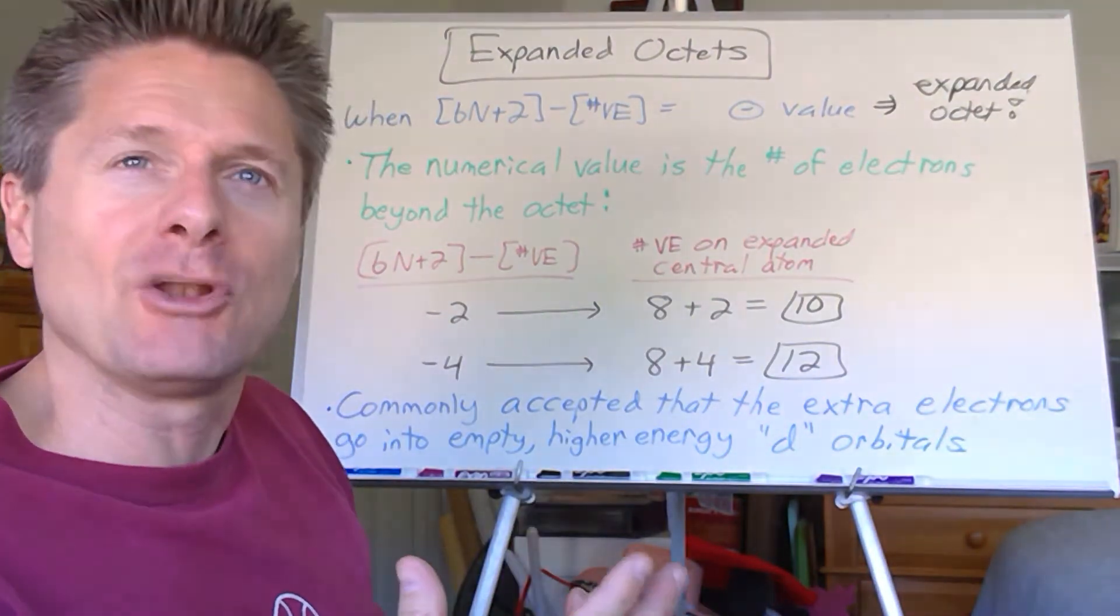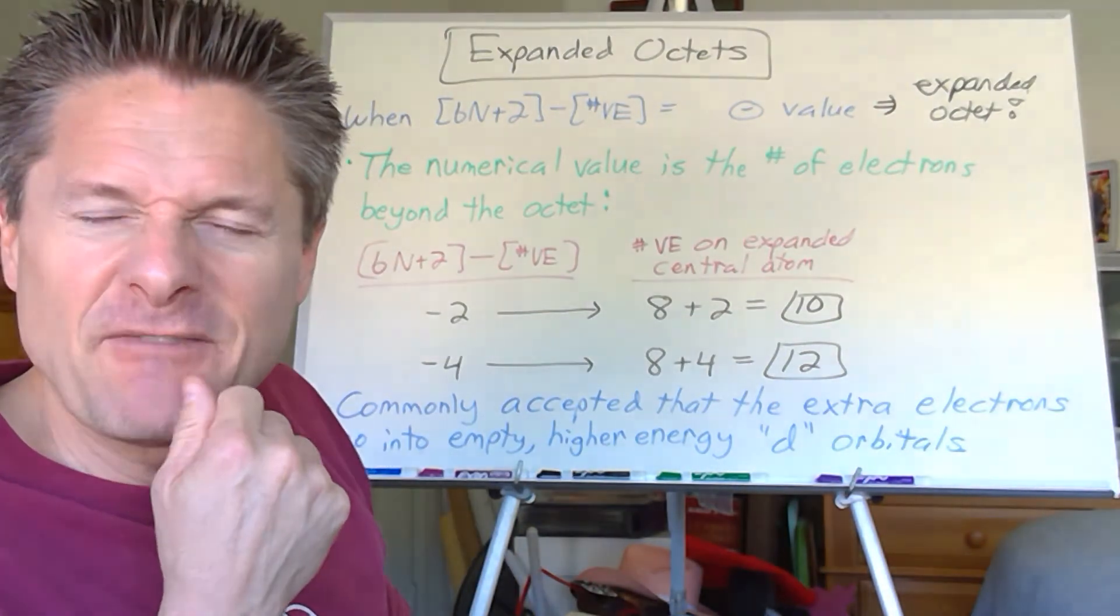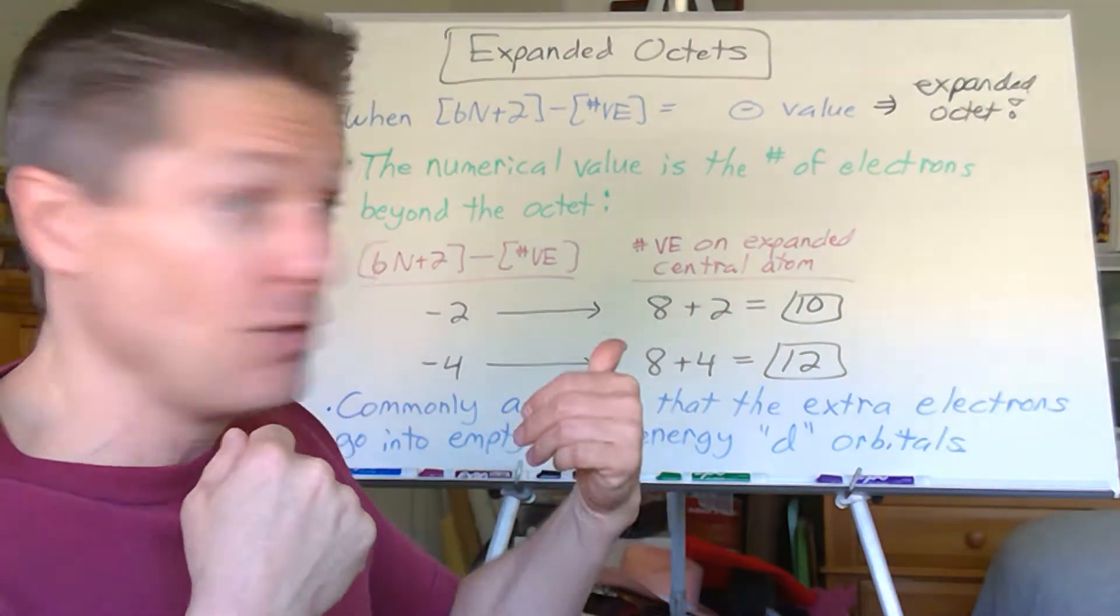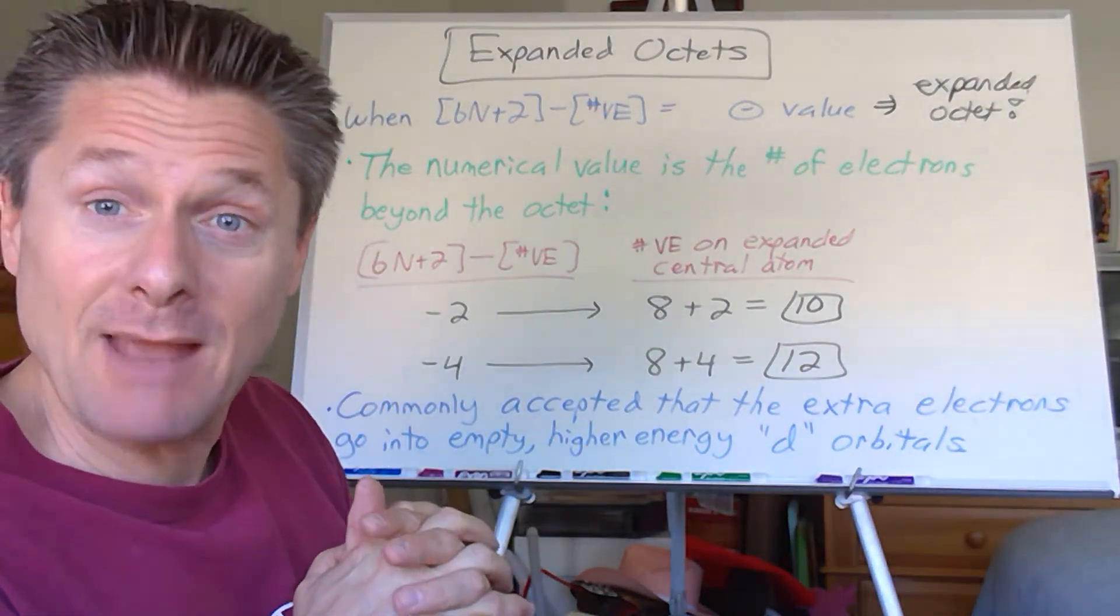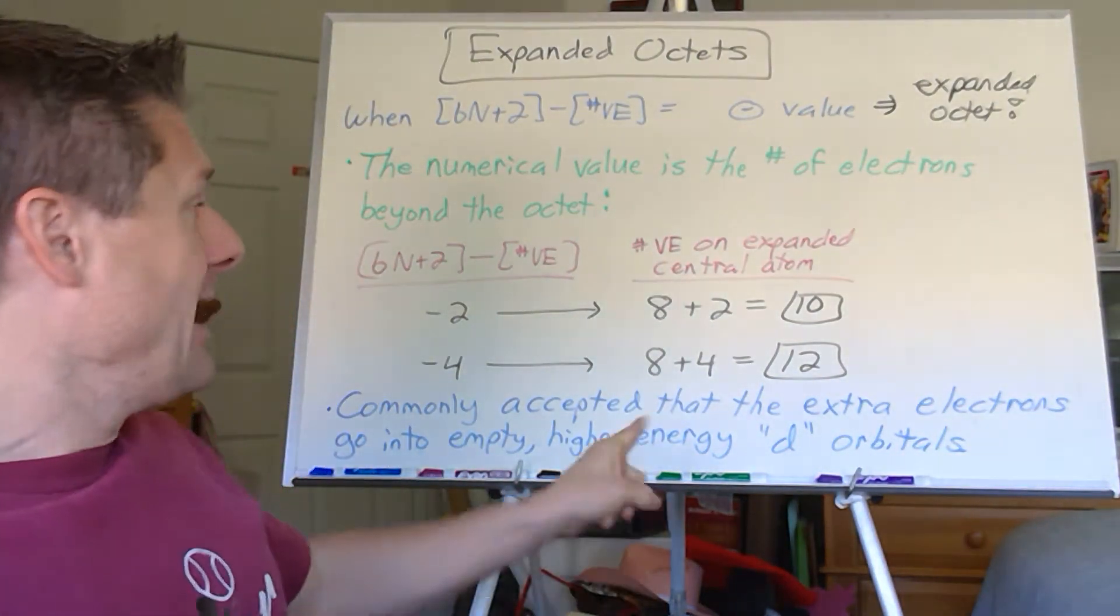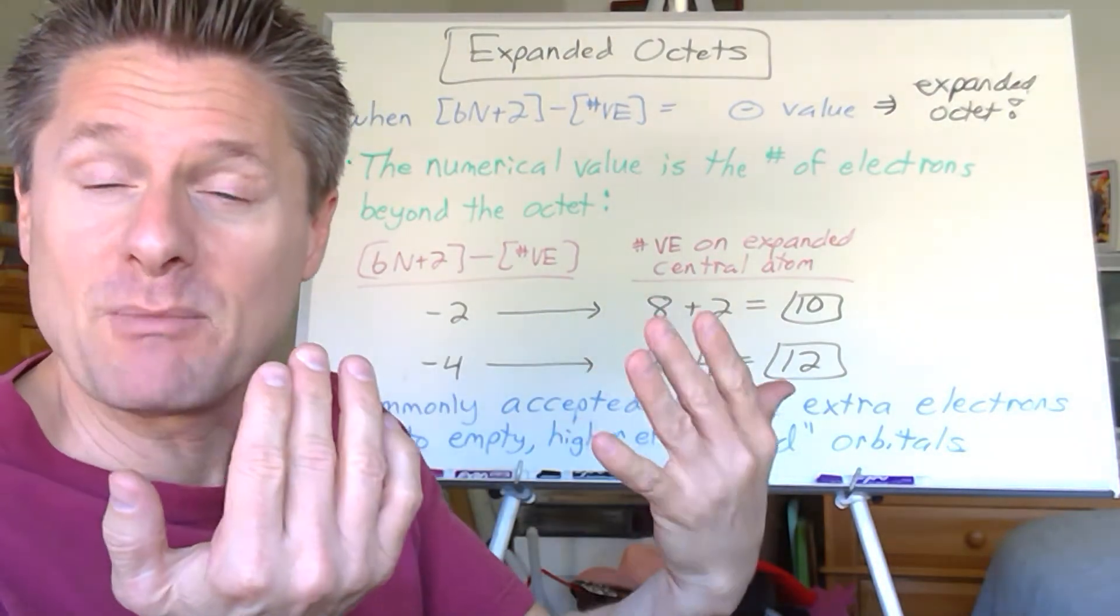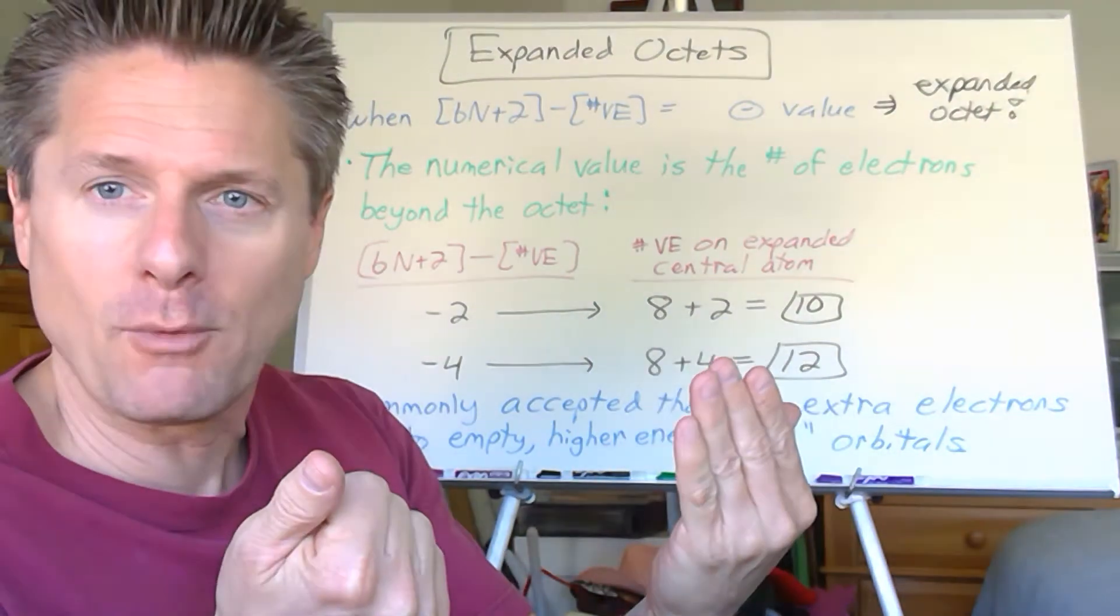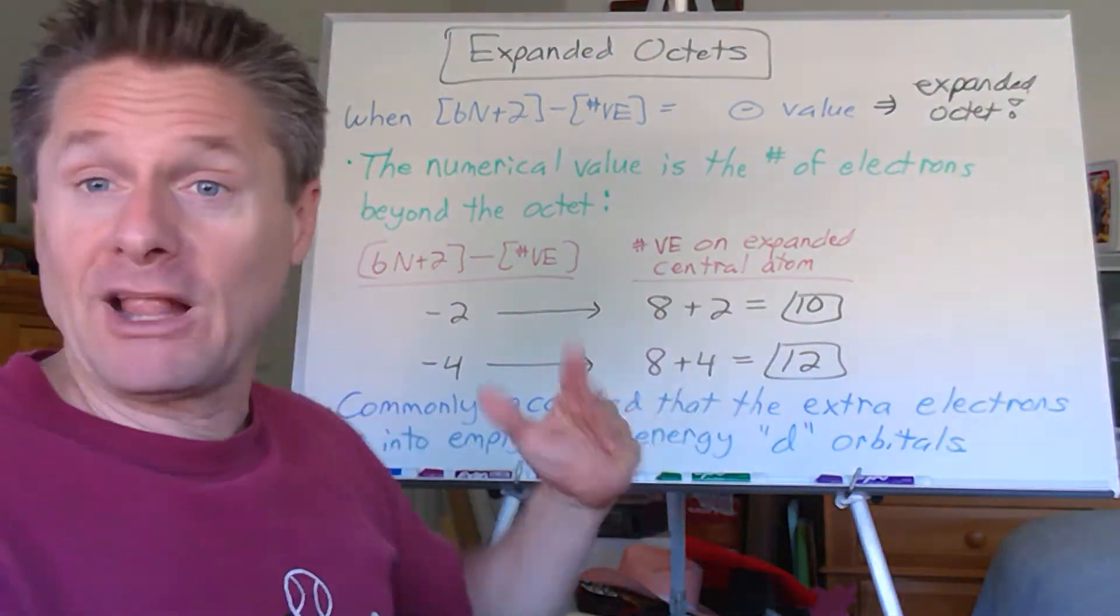So that's one of the, for me, the traditional way of doing Lewis structures makes it a little harder to figure out if you've got expanded octets. This, before you even start your process, you know, hey, I've got an expanded octet, probably on my central atom. And where do those extra electrons go? Because the 8 electrons fills up the S and the 3Ps. You've got an S orbital and 3P orbitals, 2, 4, 6, 8, done.